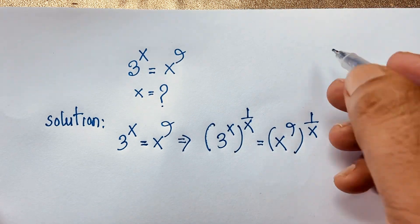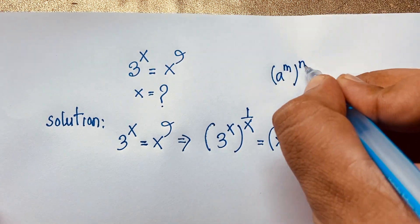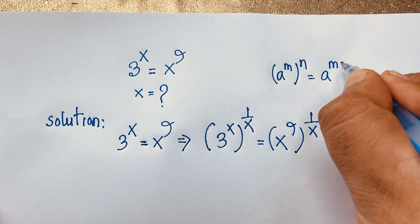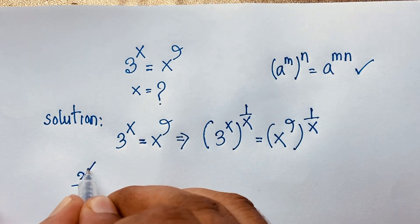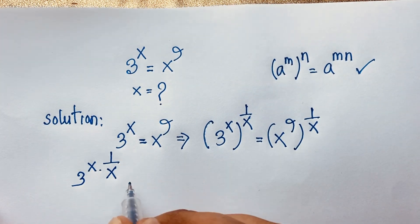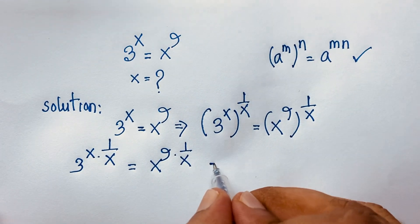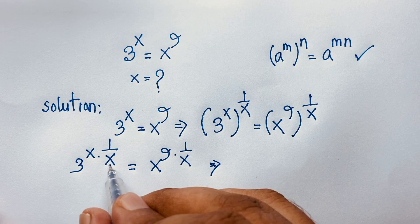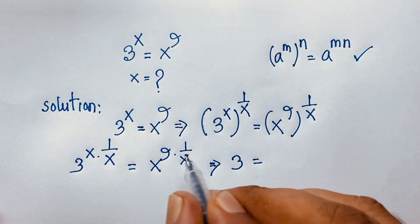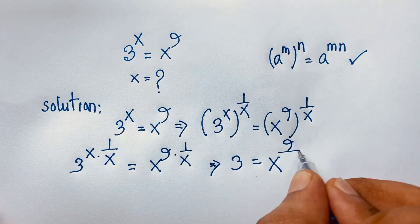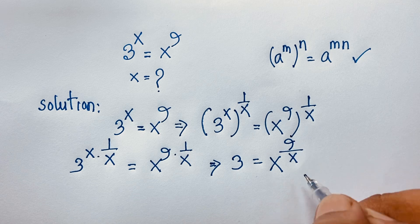According to the exponential formula, (a^m)^n equals a^(m·n). Applying this formula, 3^(x · 1/x) equals x^(9 · 1/x). Here, x times 1/x cancels, giving us 3 on the left side. And the right side becomes x to the power 9 over x. So we find: 3 equals x to the power 9 over x.